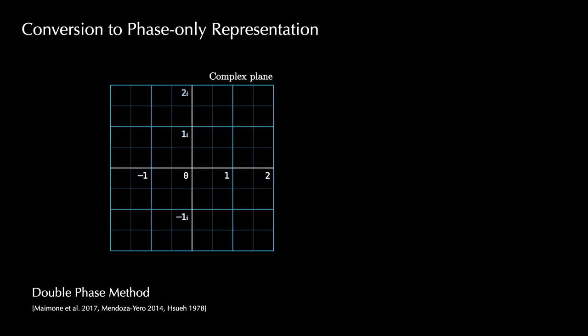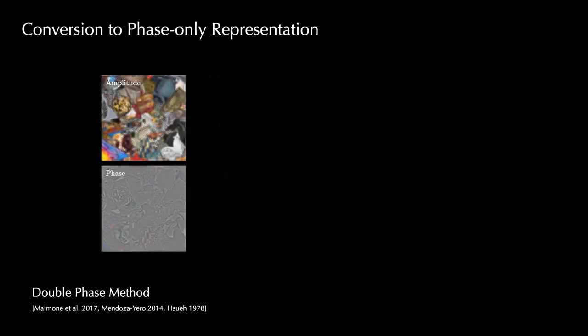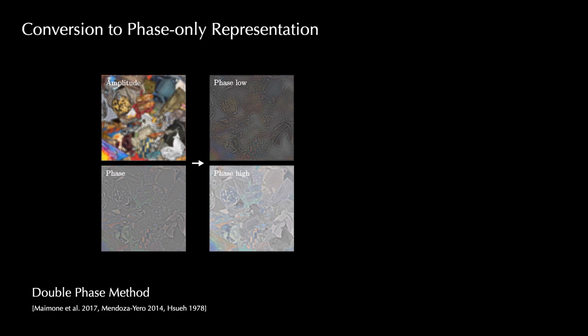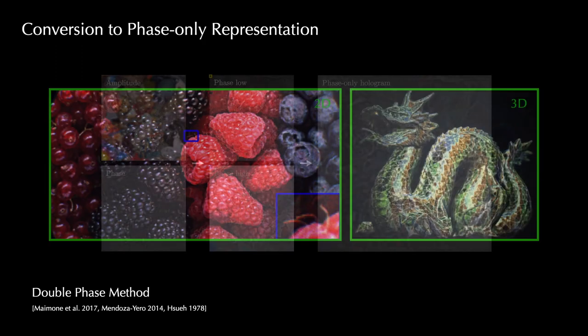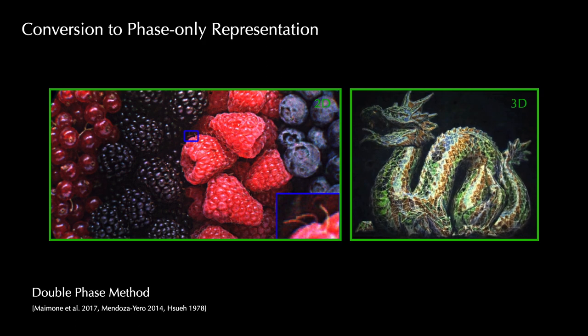Direct methods, such as double-phase encoding, rely on the observation that any normalized complex value can be represented as the sum of two phase-only values. For a complex hologram, this method decomposes it into two phase maps and interlaces them in a checkerboard pattern to produce a phase-only representation. The double-phase method is instantaneous and applicable to both 2D and 3D holograms.